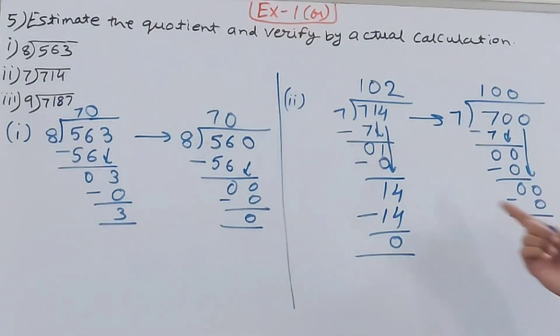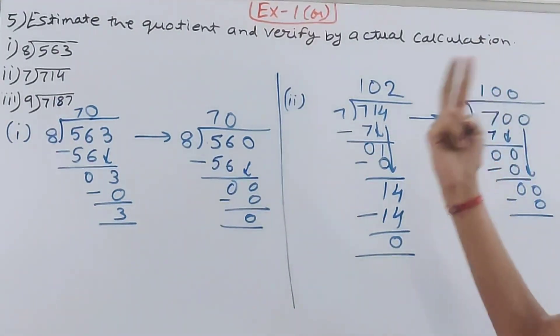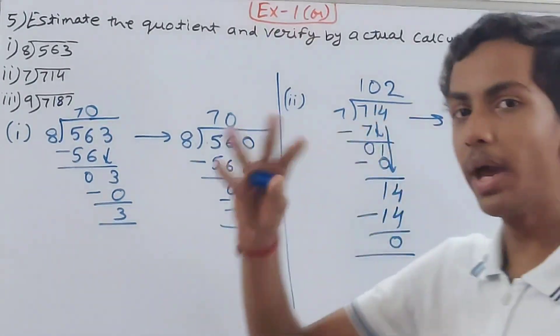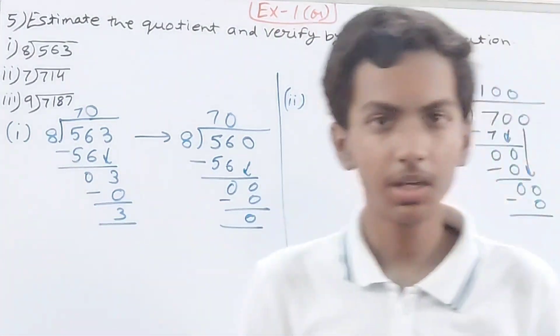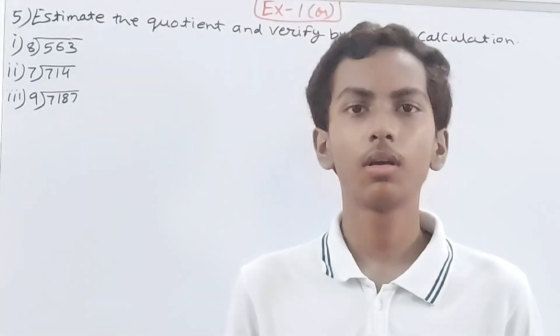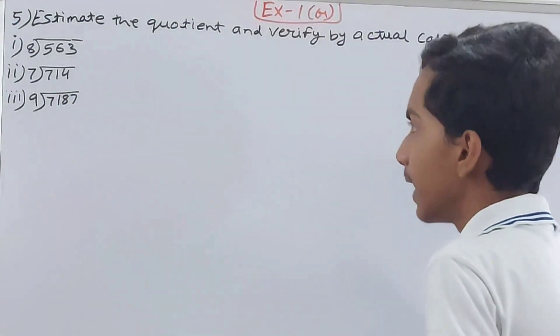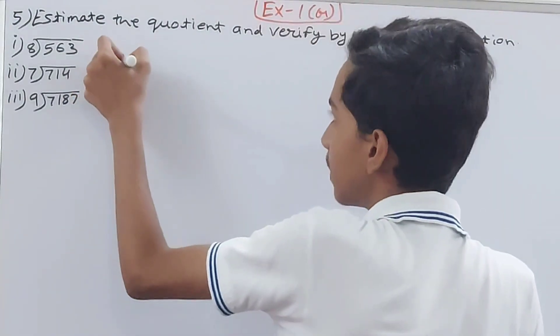The difference is 2 — actual quotient is 102 but estimated is 100. Moving on to the third part.